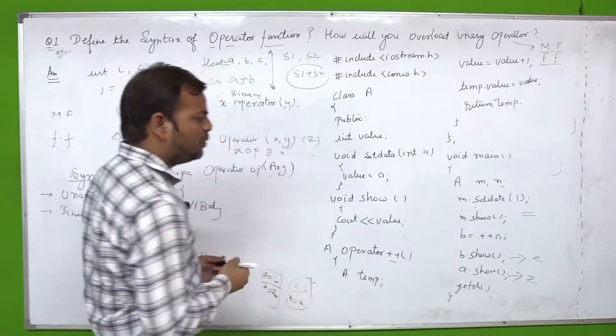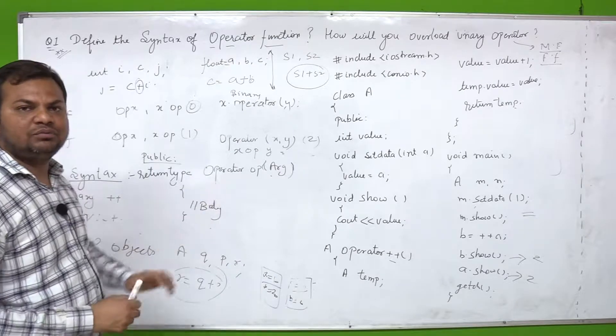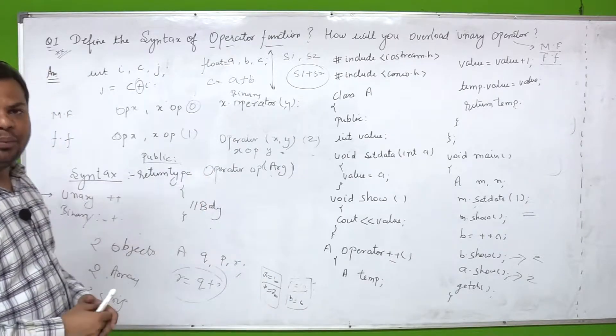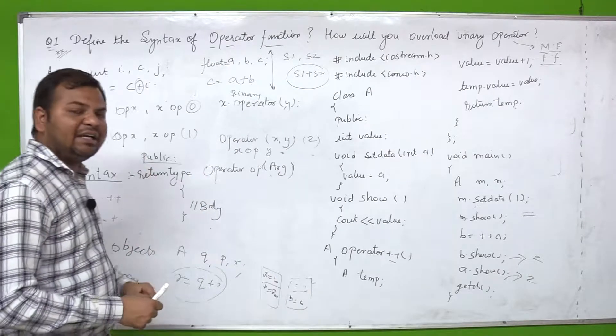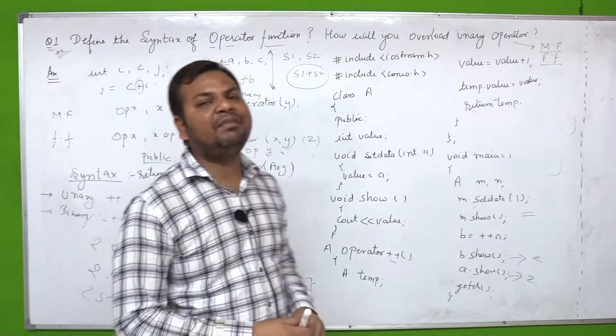What type will it be? We will tell you. And then body. Fine? This is my operator function. It is must that your operator function should be defined in public. Why?